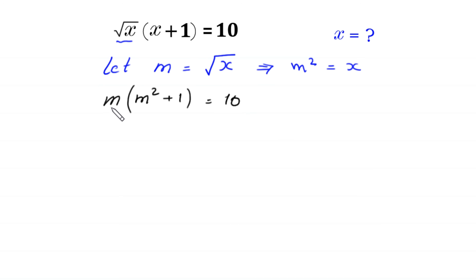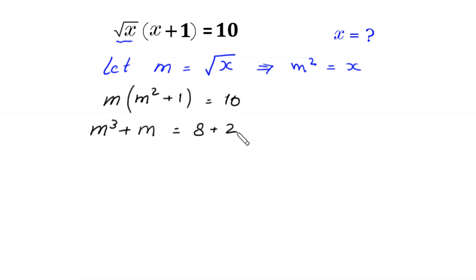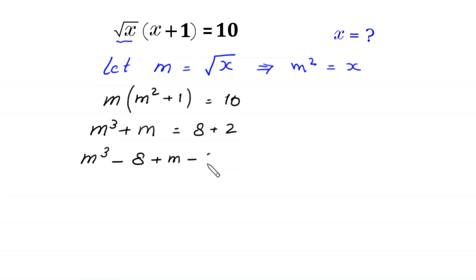Now we multiply m by m squared: m times m squared is m cubed, plus m times 1 is m, is equal to 10. We can write this 10 as 8 plus 2. Next, m cubed, we move this 8 to the left side — it becomes negative 8 — plus m, and we move plus 2 to the left side — it becomes negative 2 — is equal to 0.